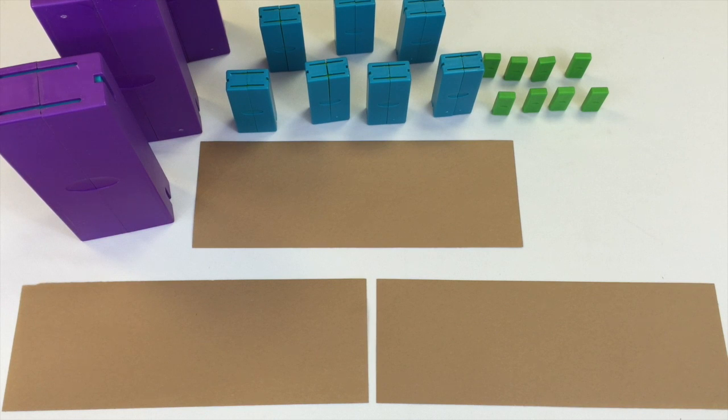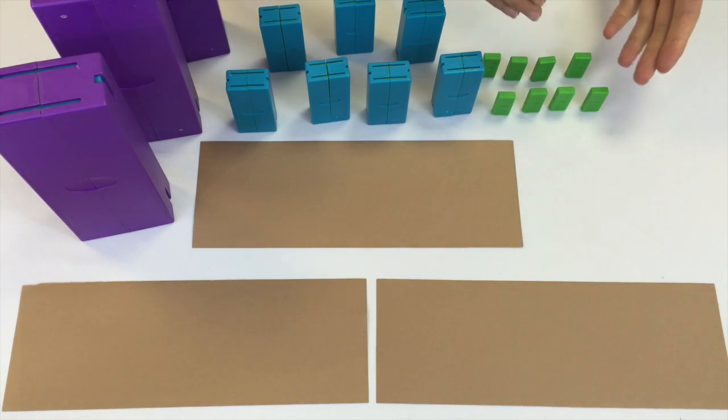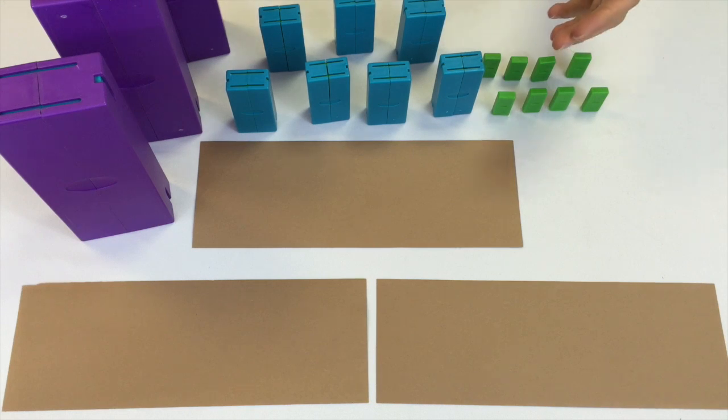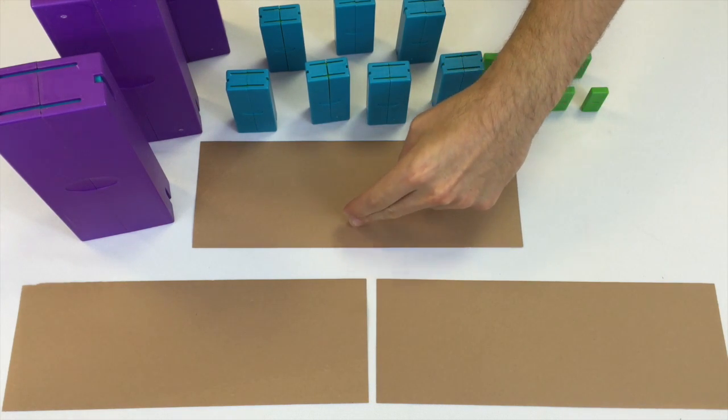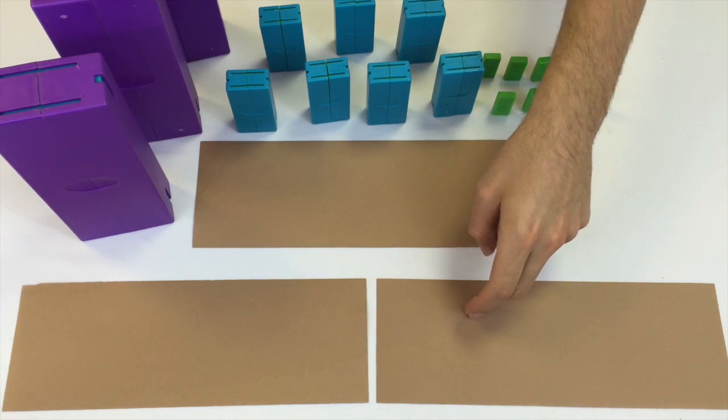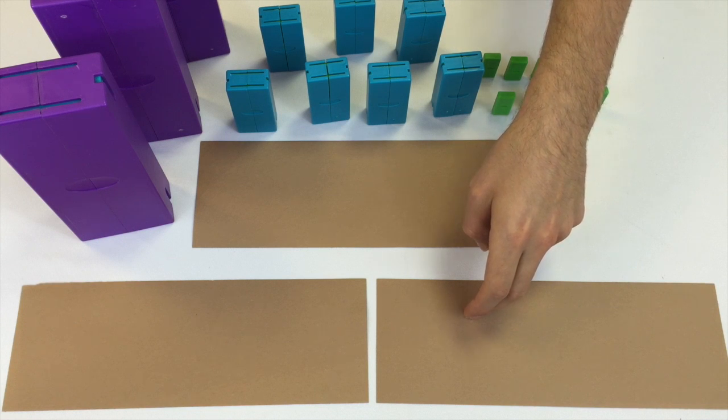Division is separating the quantity into equal groups. So we're gonna do it with these blocks. I have 378 blocks here. We're gonna divide by three. I've laid down three brown pieces of paper to show the piles I'm gonna be making.